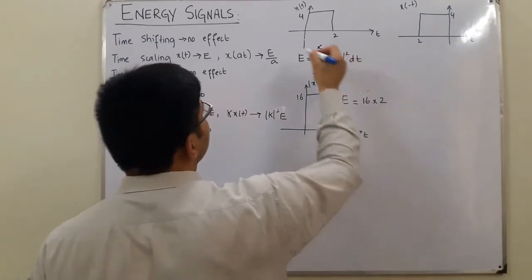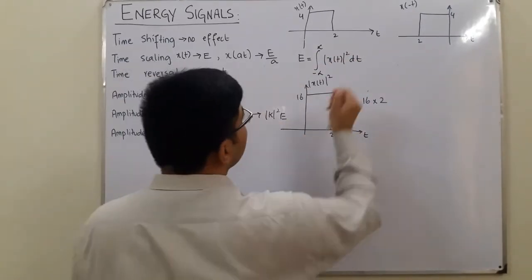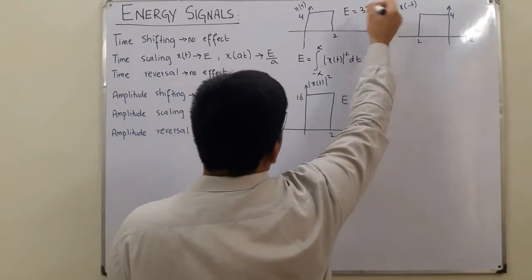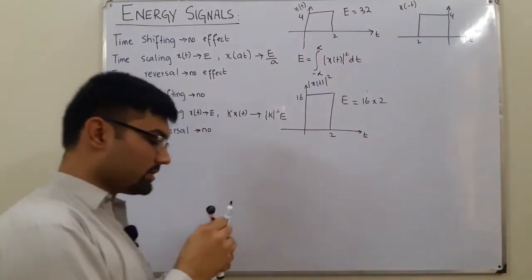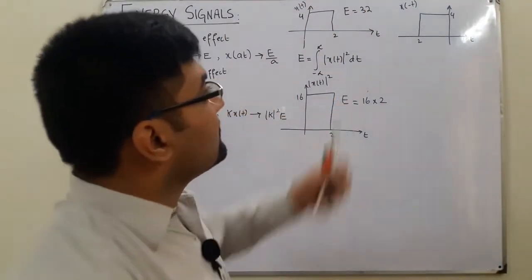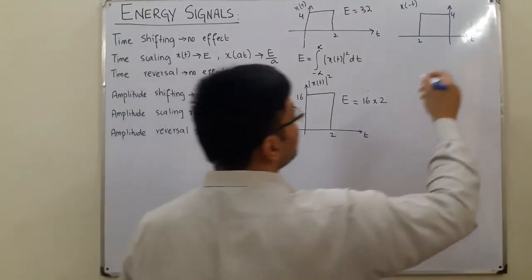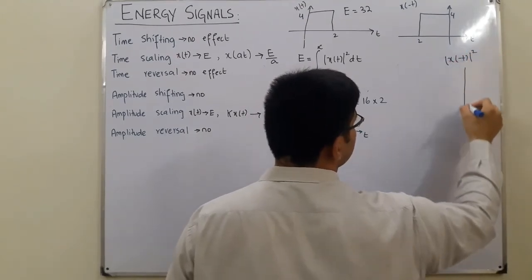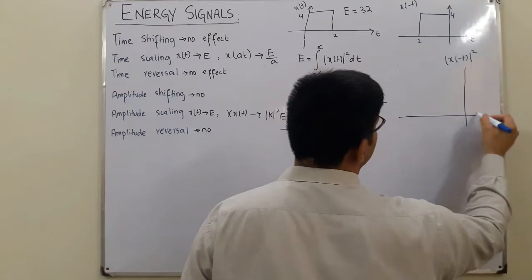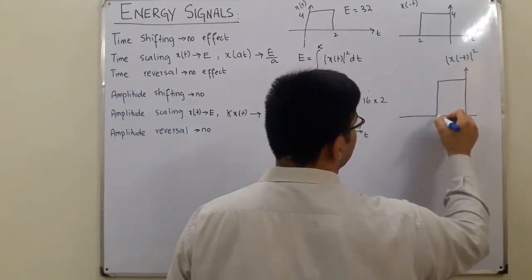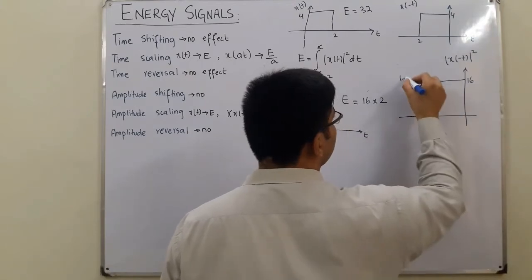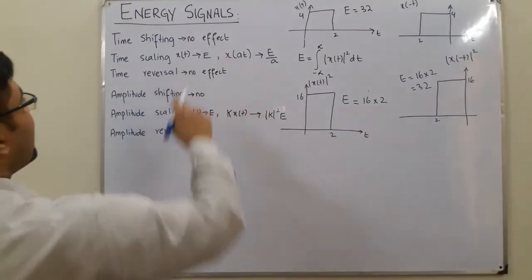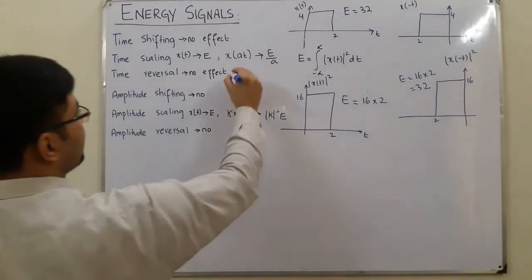The energy of the original signal is 32 units. Now for x(-t): if you take |x(-t)|² and square it, you get the same shape — amplitude 16, width 2 — so the energy is again 16 × 2 = 32. Time reversal has no effect, and we have seen it.